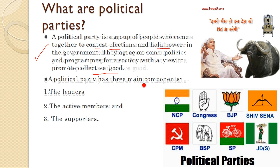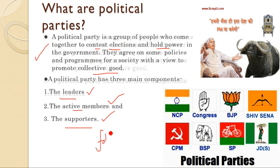A political party has three main components: the leader, the active members, and the followers or supporters. Without any of these, a political party simply cannot exist. They need to have the leader, active members, and supporters.